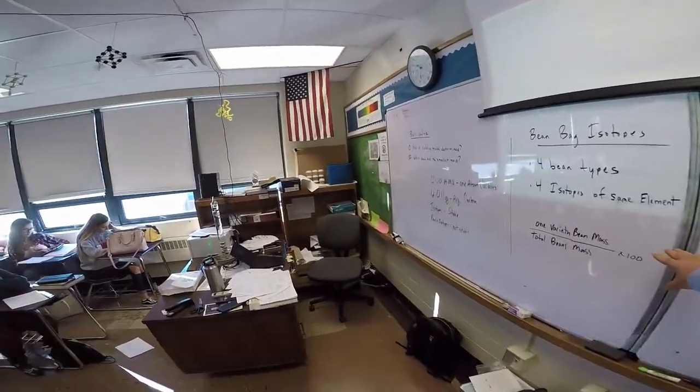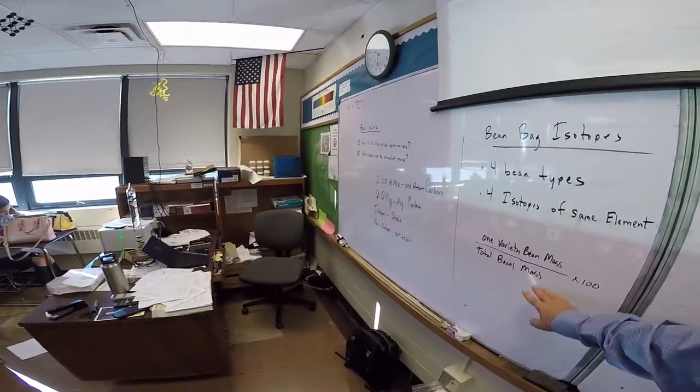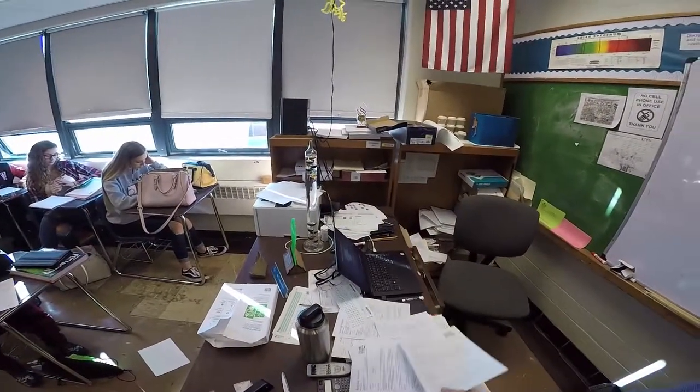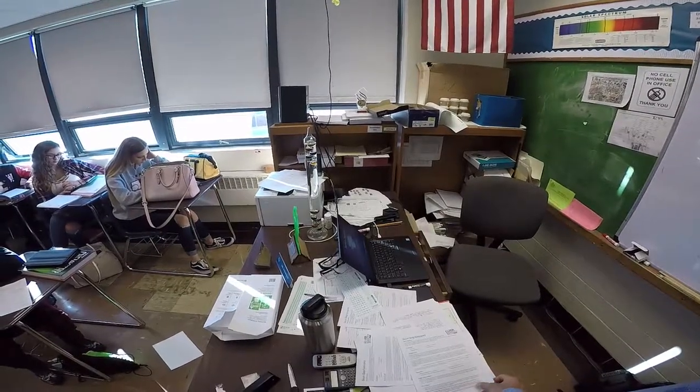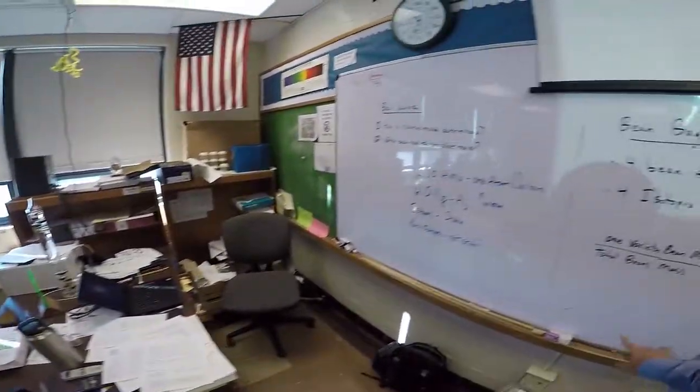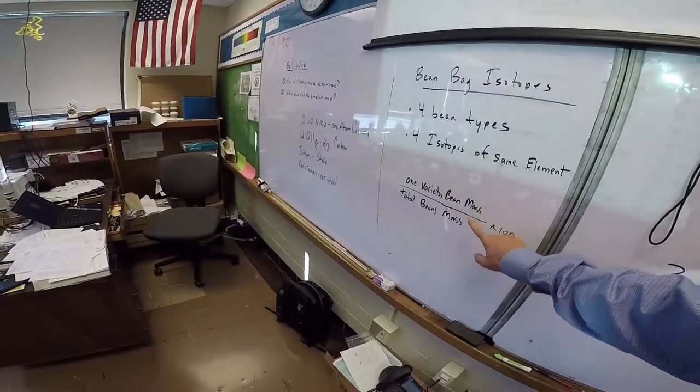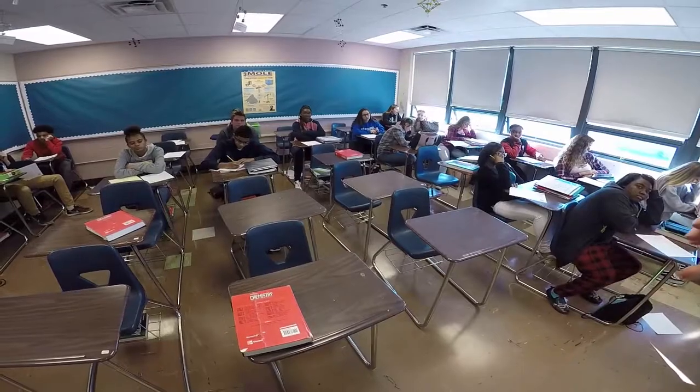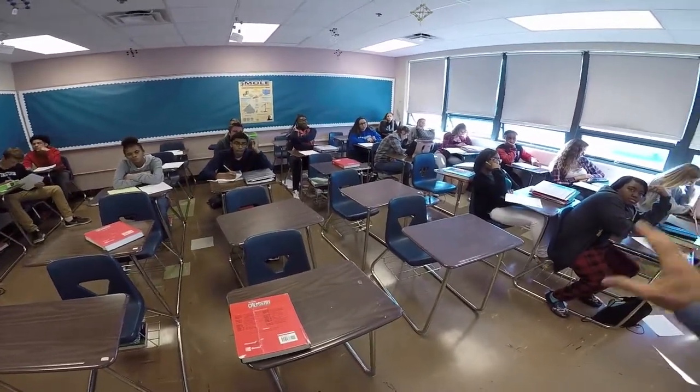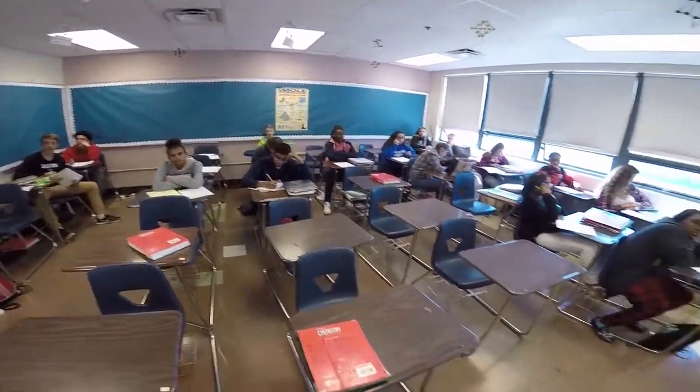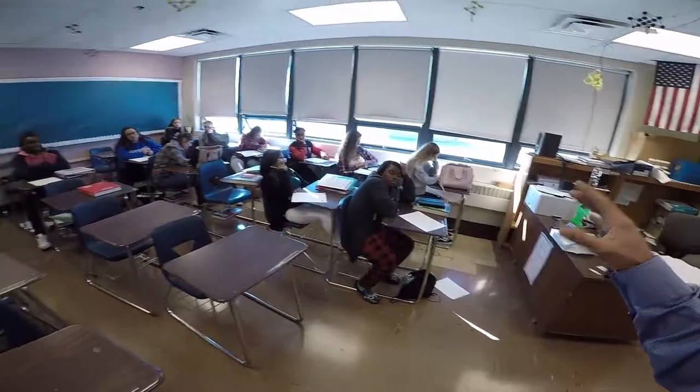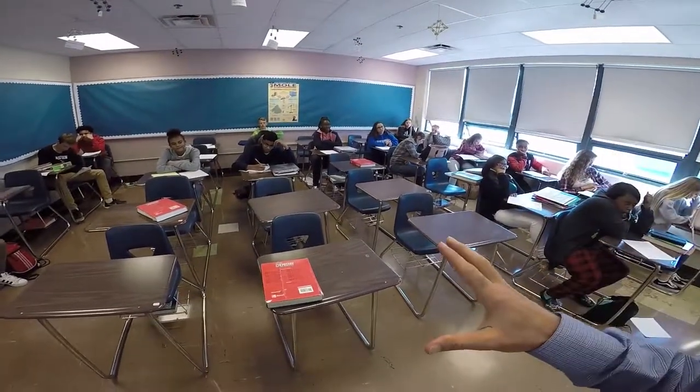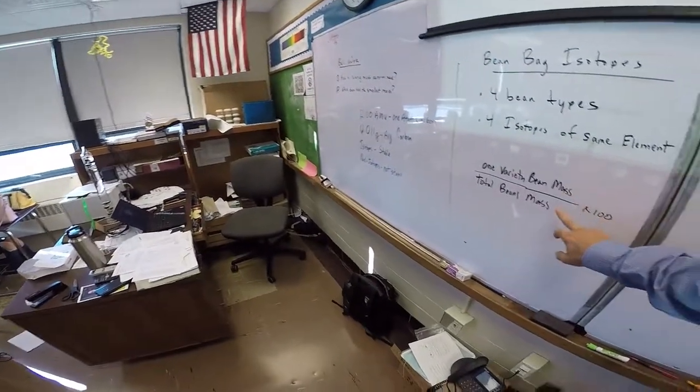All right, so in the lab today, the way you want to calculate the percent abundance, you're going to take the mass of the one bean variety divided by the total mass of the beans times 100. Now, each bean container is going to be different. So don't look off your neighbor. Don't count out a number of beans. The point is that with the percent abundances, they're the same throughout nature. So if I go and look at a carbon sample in Russia, it's going to be the same as the carbon sample in China. So we don't want to count out a specific number of beans. We just want to go with what's in the container. So you're kind of getting an idea of these percent abundances.